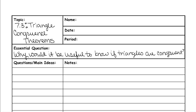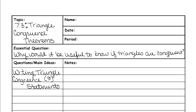The first thing we're going to go over is how to write triangle congruent statements. You need to know that the symbol for congruent is an equal sign with a little tilde symbol at the top. So anytime that you see that, it means congruent — it means they're the exact same.